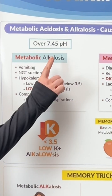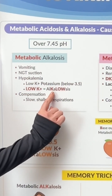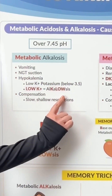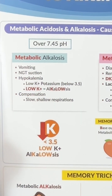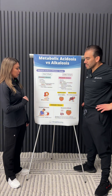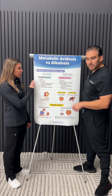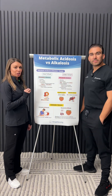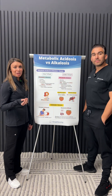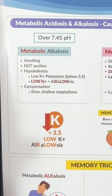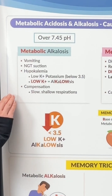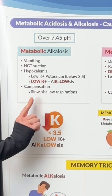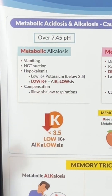Think alkalosis — the K is low. So we're also looking at low potassium for alkalosis. If we're in metabolic alkalosis, who's going to come to save us is going to be the lungs. So for compensation, we're going to see slow, shallow respirations.